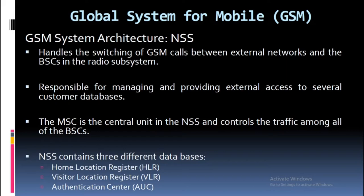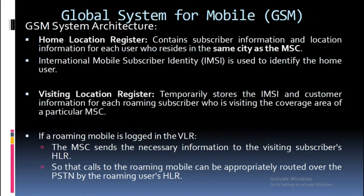The NSS contains three different databases: Home Location Register (HLR), Visitor Location Register (VLR), and Authentication Center (AUC). The HLR contains subscriber information and location information for each user who resides in the same city as the MSC.